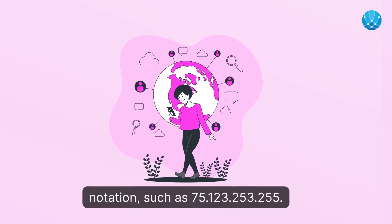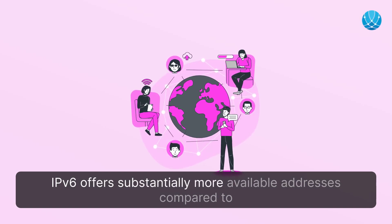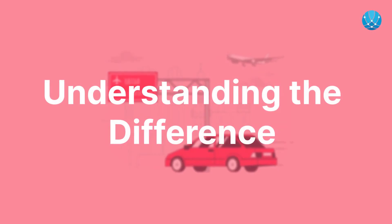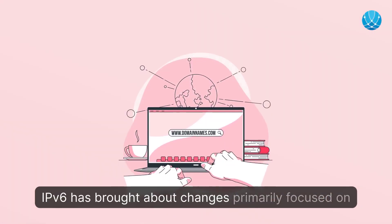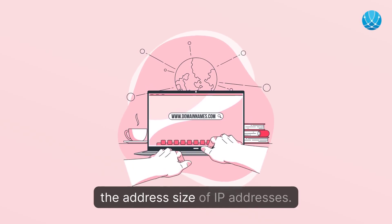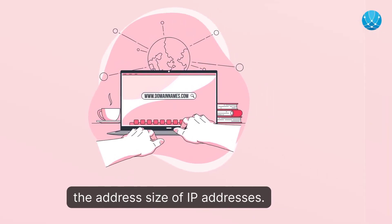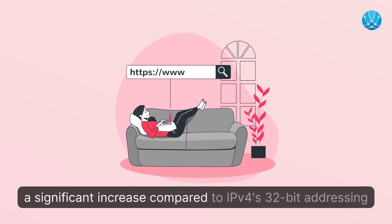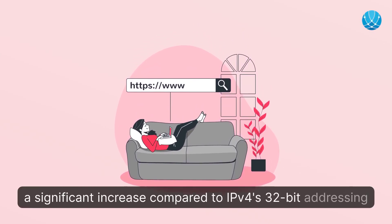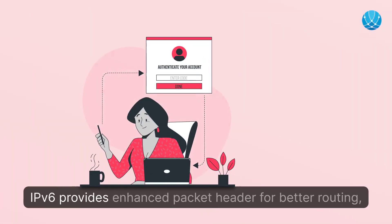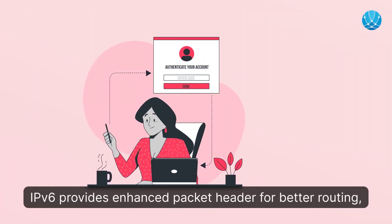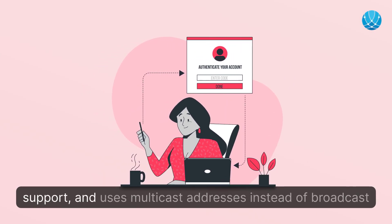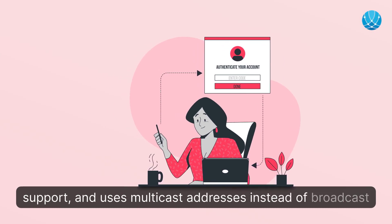IPv6 offers substantially more available addresses compared to IPv4. With 128 bits of addressing space, IPv6 provides a significant increase compared to IPv4's 32-bit addressing space. IPv6 also provides an enhanced packet header for better routing, improved mobility support, mandatory data security, better quality of service support, and uses multicast addresses instead of broadcast addresses.